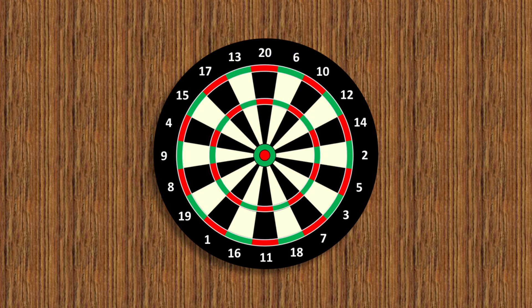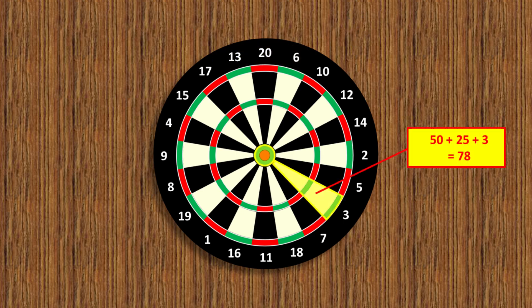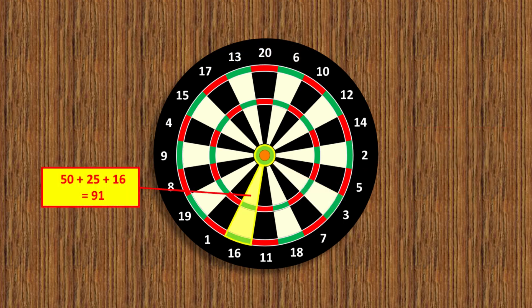I'm also a bit disappointed there aren't 20 triangles, but if you stretch the rules of the puzzle to include the bull and outer bull, then you can create two more.